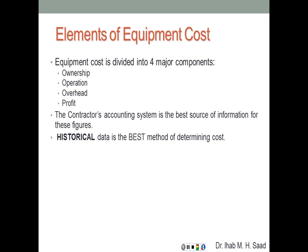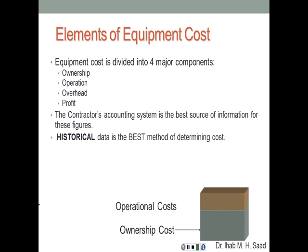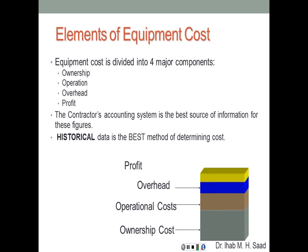Equipment costs can be divided into four major components: ownership, operation including maintenance and repair, overheads, and profit. The contractor's accounting system is the best source of information for these figures, and historical data is the best method for determining cost. The ownership cost is the predominant part because purchasing that large asset is the biggest bulk. Then there's the operational cost of running, maintaining, and repairing the equipment from time to time.